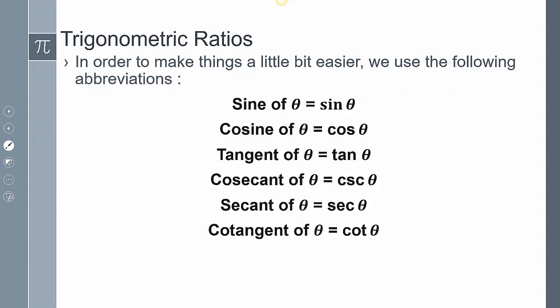To make things easier, we use abbreviations. Instead of writing out sine of theta in full, we write the abbreviated form. It's important to read the entire statement together — cosecant of theta, tangent of theta, secant of theta. It's more proper to say cosine of theta rather than just cos theta. That's the proper way of stating these.